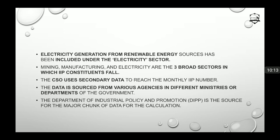The CSO uses secondary data to arrive at the monthly IIP number. This data is sourced from various agencies in different ministries or departments of the government. The Department of Industrial Policy and Promotion (DIPP) is the source for the major chunk of data used in the IIP calculation.